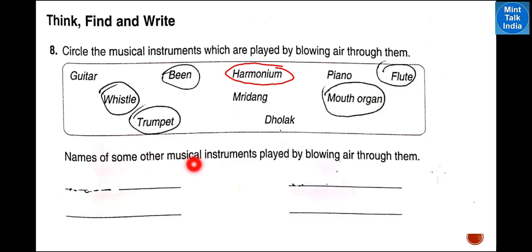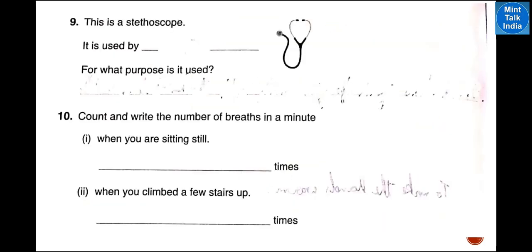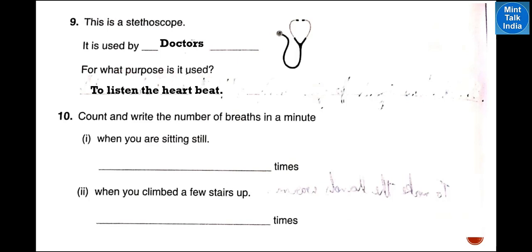Name some other musical instruments played by blowing air through them: trumpet, saxophone, trombone, bugle, and many more which you can see in the picture. Next: this is a stethoscope, used by doctors. It is used to listen to the heartbeat.